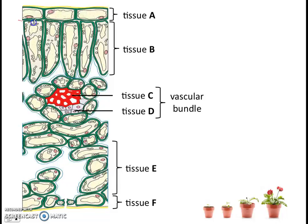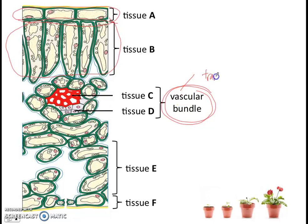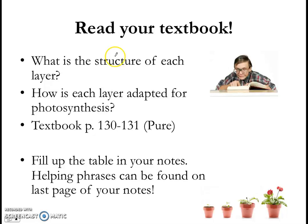Here you see a diagram of the cross section of the leaf — a different diagram of the leaf cross section. At the top you see a layer, tissue A, made out of cells which look quite similar. Tissue B here is made out of cells that also look quite similar to one another, but different to the cells in tissue A. Tissues C and D form the vascular bundle — the vascular bundle is involved in transport of substances. And tissues E and F are also in the leaf. I want you to pick up your textbook and read about what is the structure of each tissue layer, and how each layer is adapted for photosynthesis.